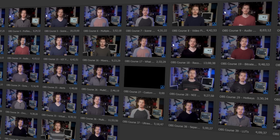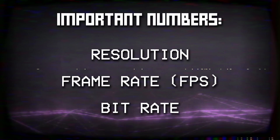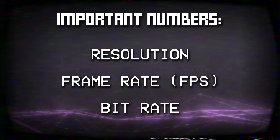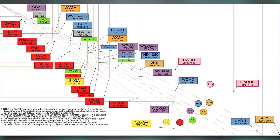When adjusting your OBS settings for streaming and recording, there are three main numbers you need to worry about, so it's important that you really understand what they are and which ones you need. Those numbers are resolution, framerate, and bitrate. Let's summarize each one quickly.